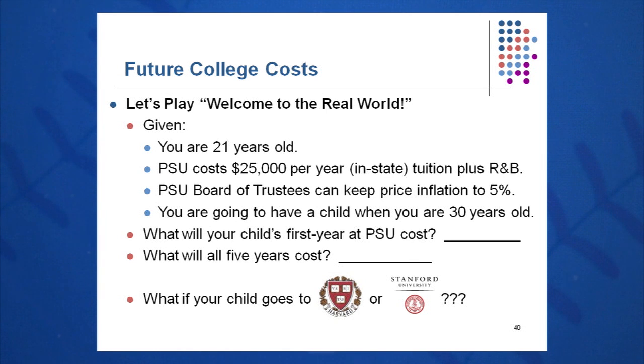Penn State, as an example, costs $25,000 per year full cost in-state. So in-state tuition plus room and board plus fees and books and things like that are estimated at approximately $25,000 per year currently. Our Board of Trustees can keep price inflation to just about 5% per year. And the question is, how much will it cost you to send your child to Penn State sometime in the future?